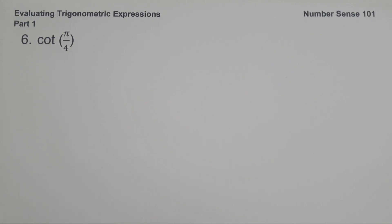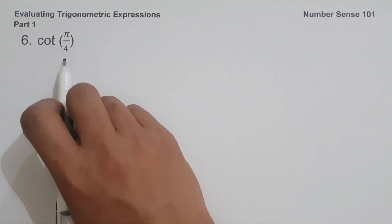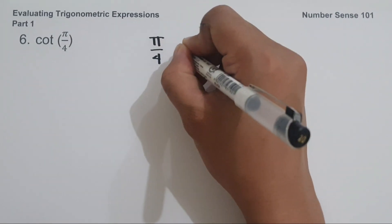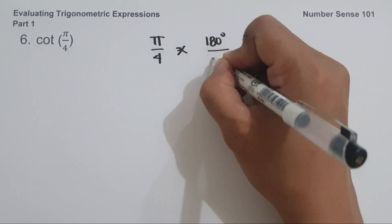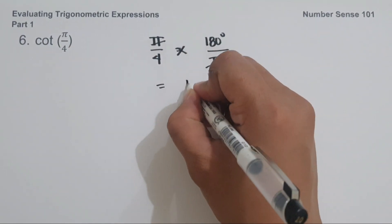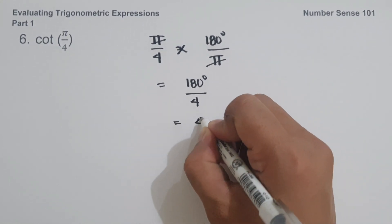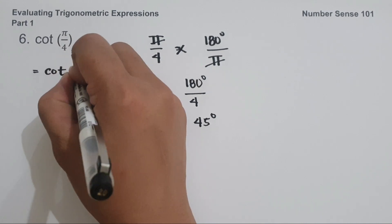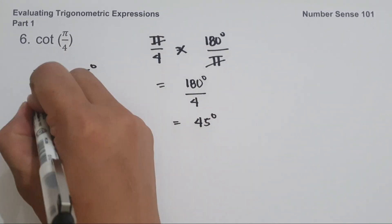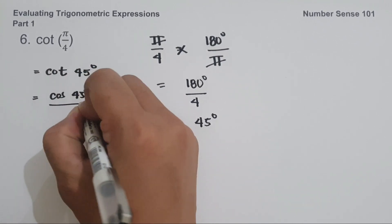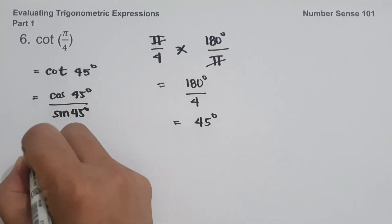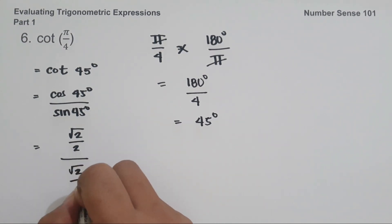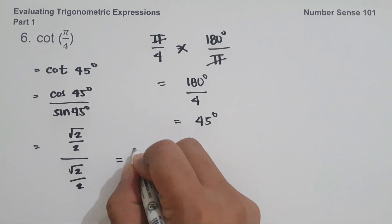On example number 6, we have cotangent π over 4. Since we have a radian measure, we convert it to degrees by multiplying by 180 degrees over π. The π cancels and we get 180 degrees divided by 4, which equals 45 degrees. So we evaluate cotangent 45 degrees, which equals cosine 45 degrees over sine 45 degrees, both equal to square root of 2 over 2. Dividing them gives 1. And this will be our answer.